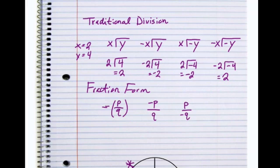So let's say that p is equal to 9 and q is equal to 3. Making those substitutions...